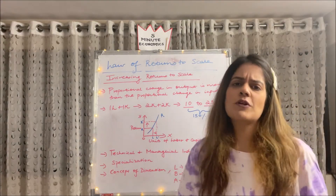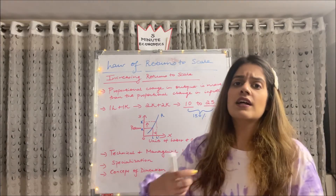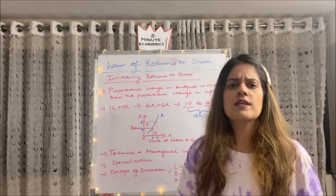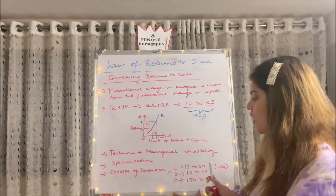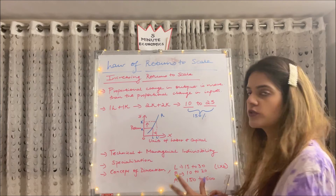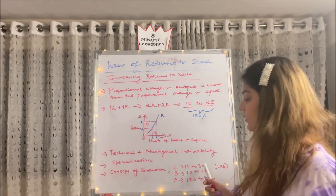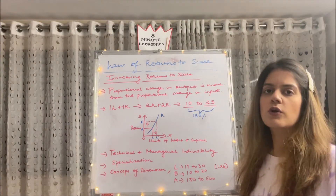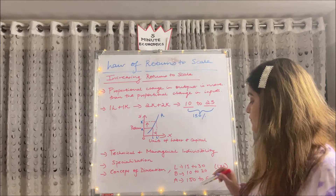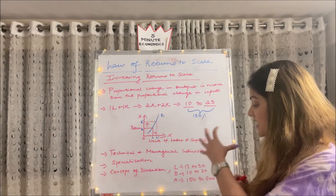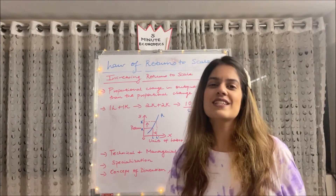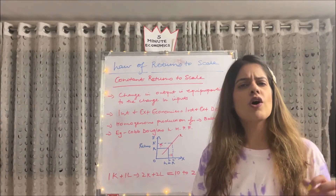Secondly, specialization — when a person does the same thing again and again, they get better and better at it, and specialization definitely leads to increasing returns to scale. There is also the concept of dimensions. For example, a room with length 15 and breadth 10 has an area of 150. If we double the length to 30 and breadth to 20, we might expect the area to go from 150 to 300, but actually the area increases from 150 to 600 — because of the concept of dimensions, the increase in output is more than the increase in input. That is all you need to know about increasing returns to scale.